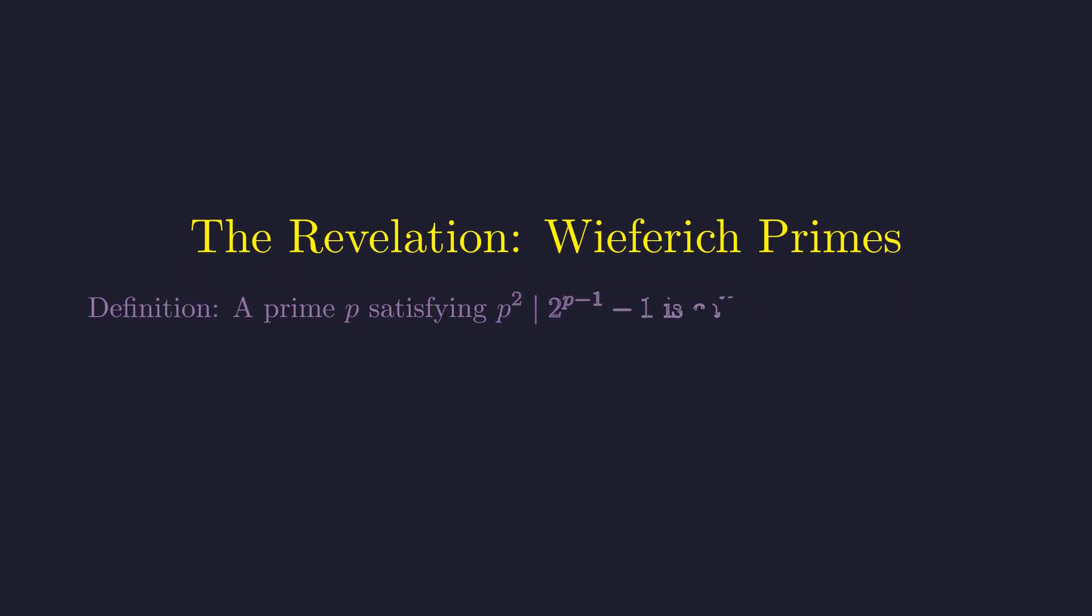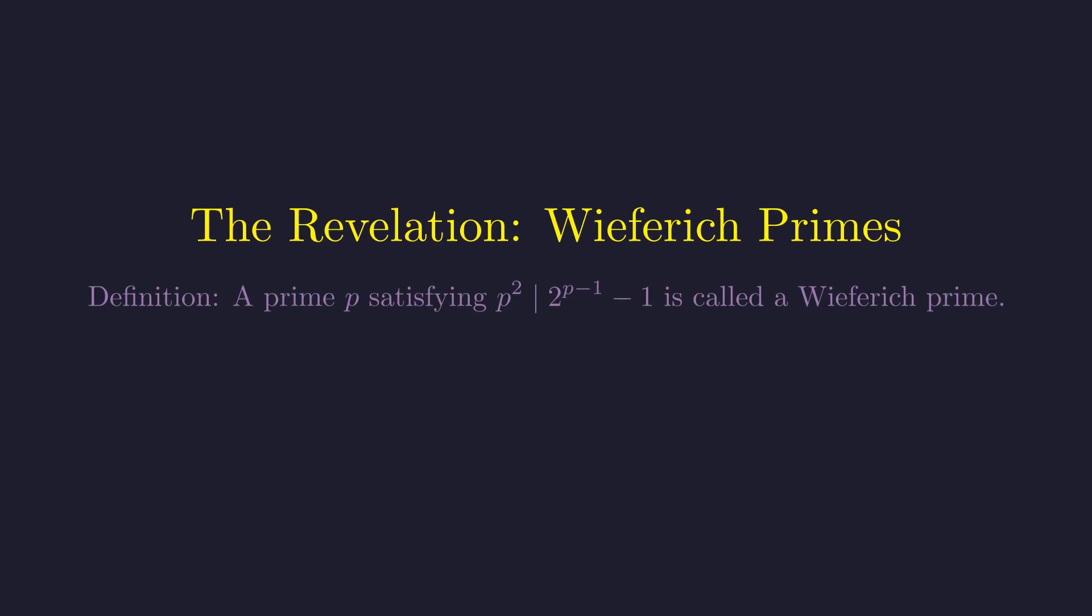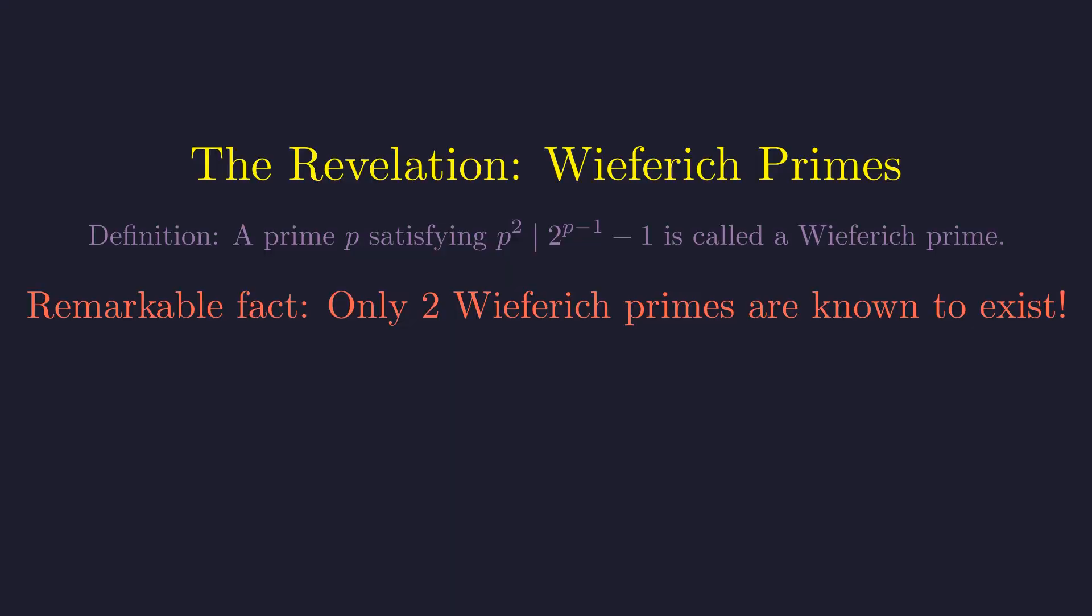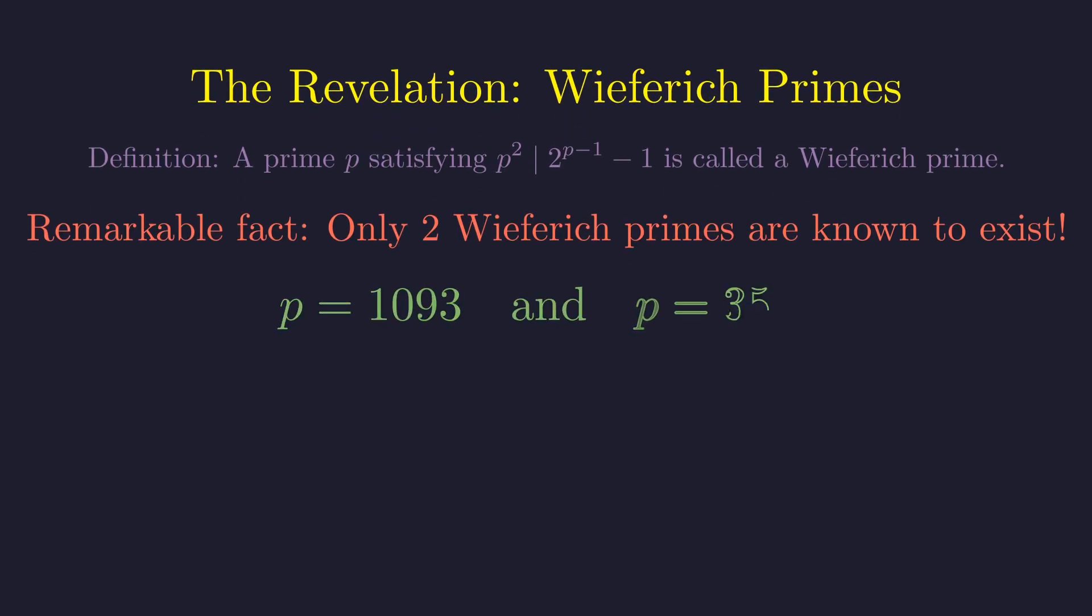Our mathematical journey has led us to one of number theory's most mysterious objects. What we've discovered has a famous name. A prime p satisfying this extraordinary condition is called a Wieferich prime, named after German mathematician Arthur Wieferich. Here's the stunning revelation. Despite intensive computational searches, only two Wieferich primes have ever been discovered.